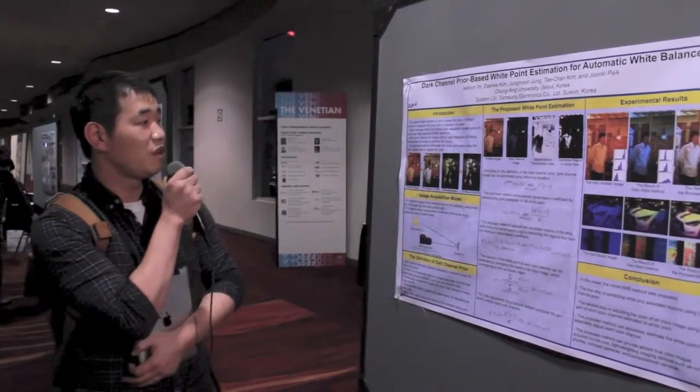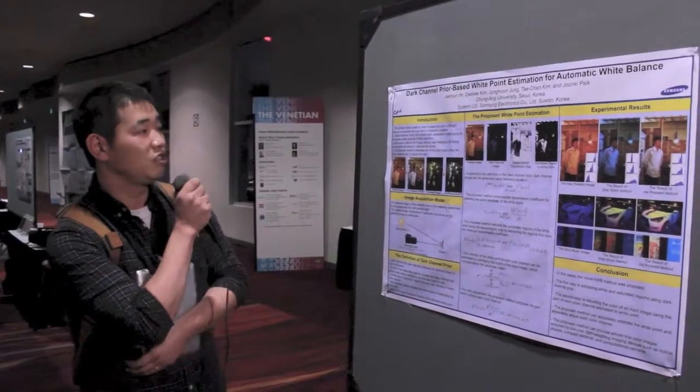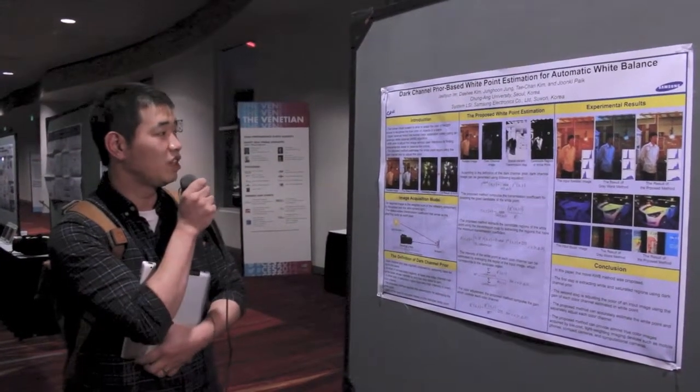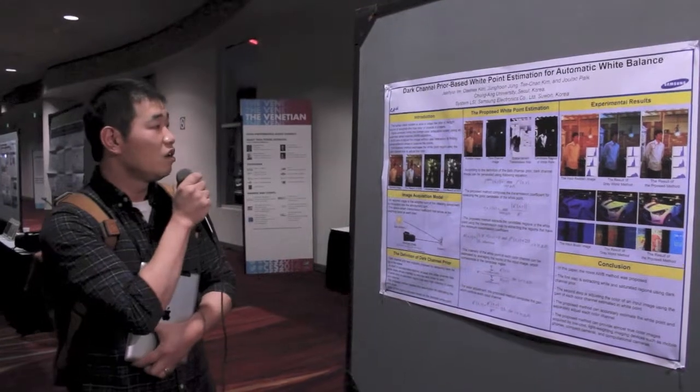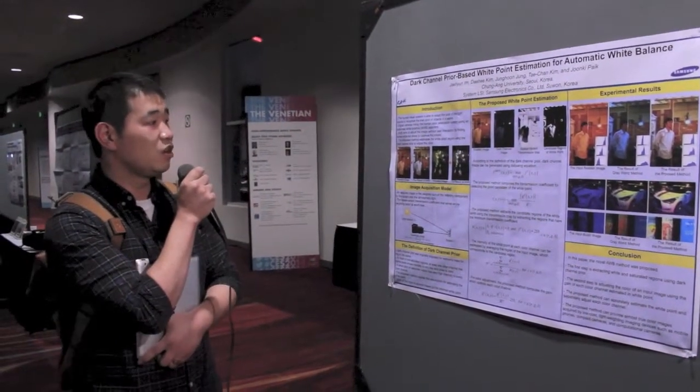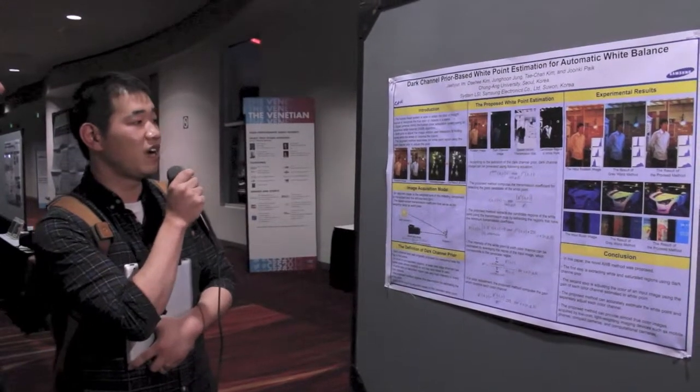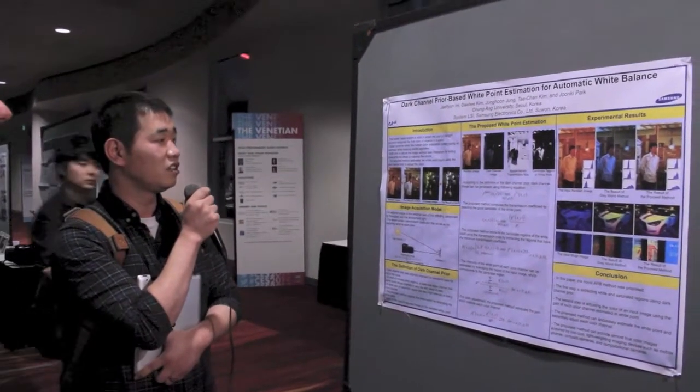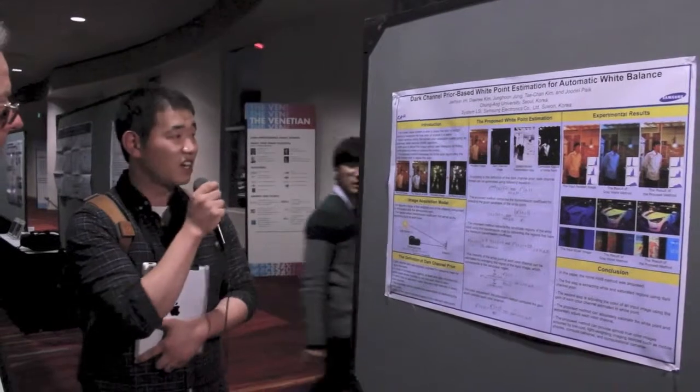Digital cameras mimic the human color adaptation system using an automatic white balance algorithm. Automatic white balance aims to adjust the image without user interaction by finding some white-like areas to balance the colors.